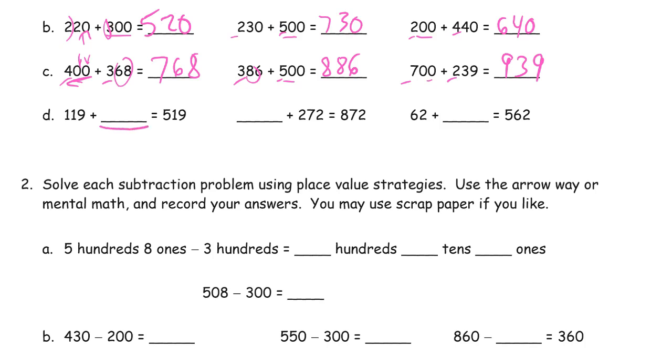Now we have a missing addend. So we have the 19 already. We don't need to add any ones or tens. So we just need to add hundreds and we need 400 more.